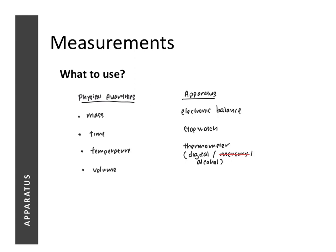For volume, it gets slightly more complicated because we can be measuring the volume of a gas or the volume of a liquid. To measure the volume of a gas, we use something called a gas syringe. To measure the volume of liquids, there are different apparatus we can use: a measuring cylinder, a pipette, or a burette. We will explain what a pipette and a burette are in the next few slides.